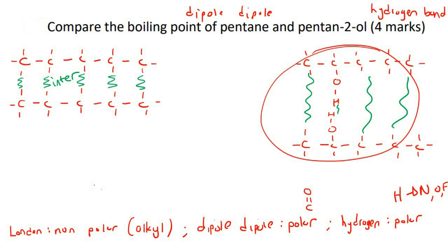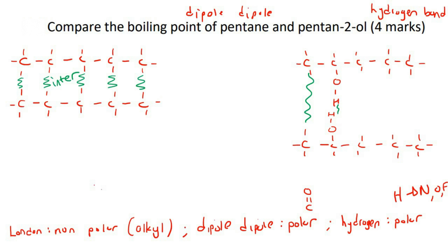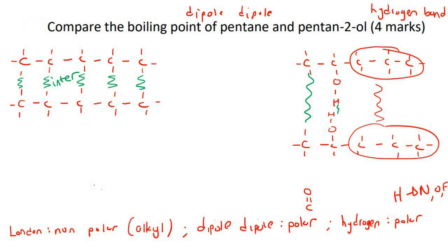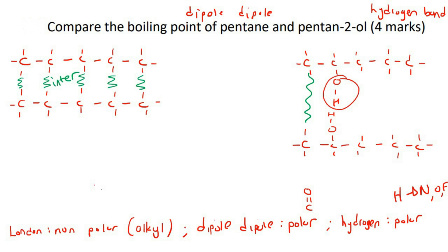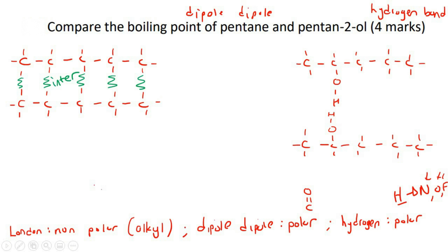In the pentan-2-ol molecule, you've actually got a little bit of everything. Between the molecules, the carbon-hydrogen parts are where you would have your London forces. Then you've also got the OH part - wherever you have hydrogen bonded to either nitrogen, oxygen, or fluorine, there's hydrogen bonding. We also have dipole-dipole because here you've got carbon-oxygen bonds which are polar but not hydrogen bonding.